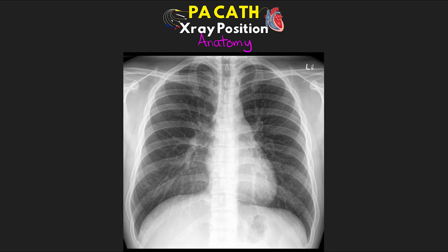First let's talk about our airways. We want to identify the trachea, which is the large descending portion. Next, from the trachea, we have the branches to the right main stem and the left main stem. Where these branch, this is where we can identify the carina. The right main stem is short and more vertical, while the left main stem has a longer, more horizontal path.